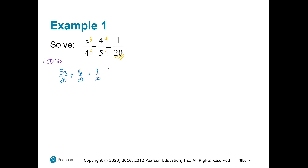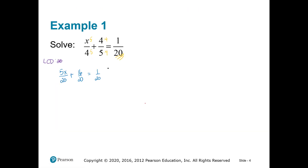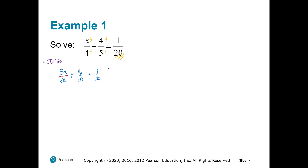All the denominators look the same. Our second step says after we make all the denominators look the same, we want to clear those fractions, and we're going to multiply to do it. Remember, the line between numerator and denominator means division, so if you want to clear division, you're going to have to multiply. I'm going to multiply by 20, the common denominator, so I can cancel those. If you do it to one of those fractions, you have to do it to every single one of them.